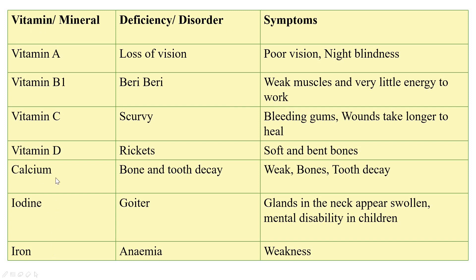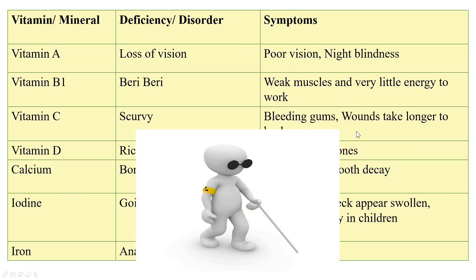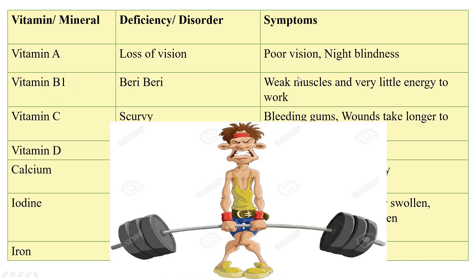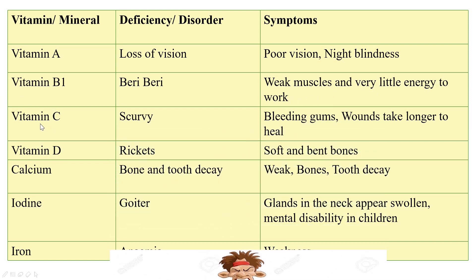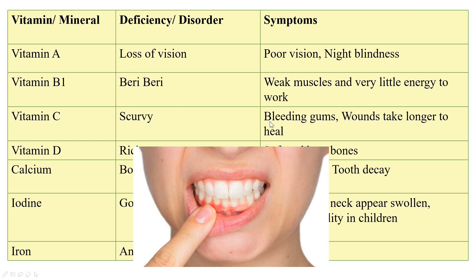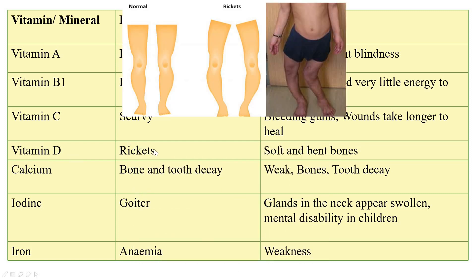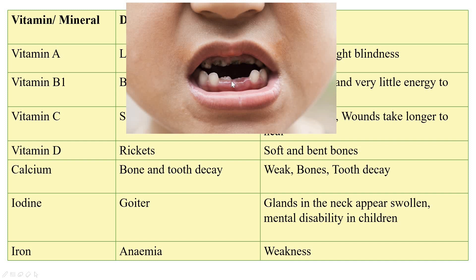Now we'll see important deficiency disorders due to deficiency of different vitamins. Vitamin A deficiency leads to poor vision and night blindness. Vitamin B1 deficiency leads to beriberi — weak muscles and very little energy to work. Vitamin C deficiency causes scurvy — bleeding gums and wounds that take longer to heal. Vitamin D deficiency causes rickets, which leads to soft and bent bones. Calcium deficiency causes bone and tooth decay.